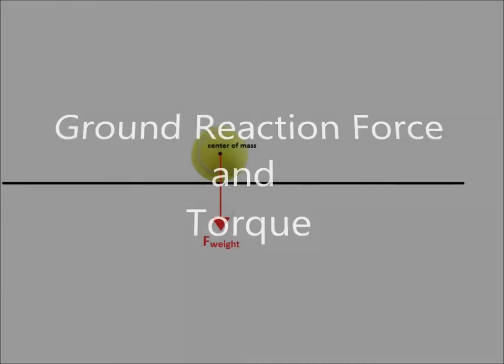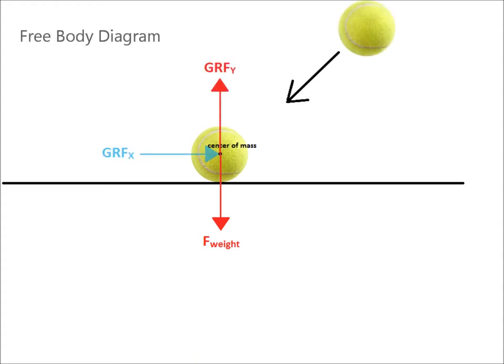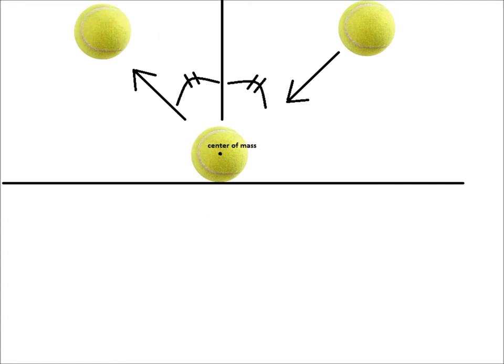The final concept is ground reaction forces and torque when a spinning ball bounces. When a ball hits the ground, the ground applies a force on the ball in two directions: vertically and horizontally. If the ball has no spin, the ball would bounce away at the same angle it fell at.